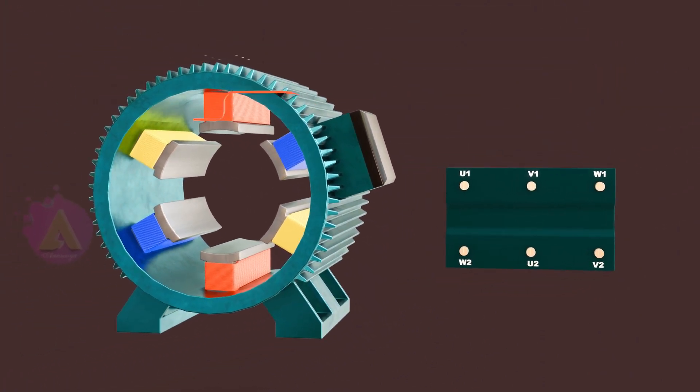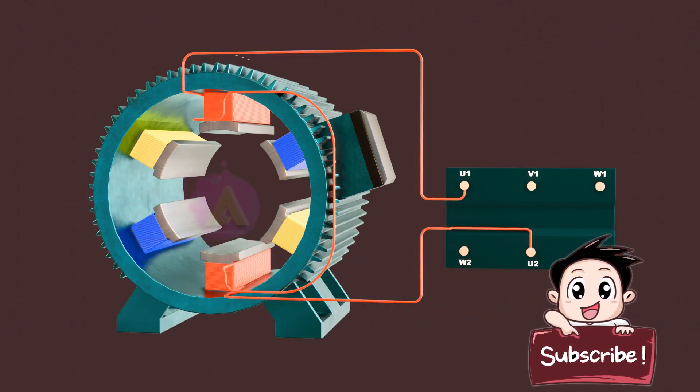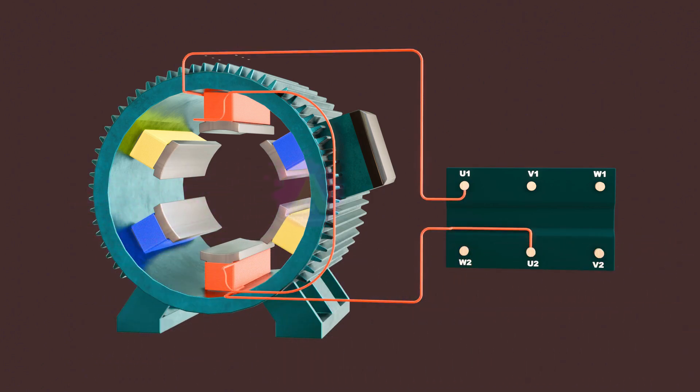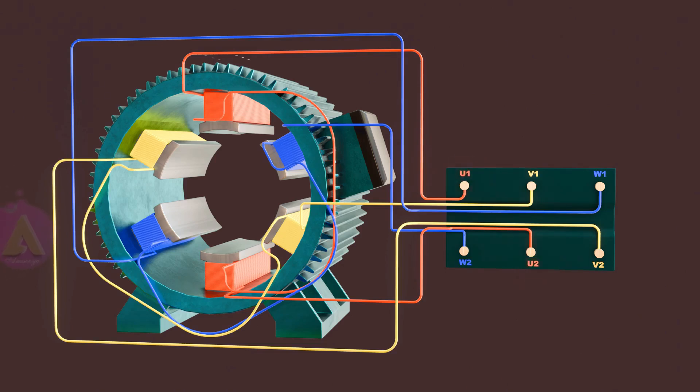We have our phase 1 coil connected to the two U terminals. Then the phase 2 coils which are connected to the V terminals, and phase 3 coil which is connected to the two W terminals. Notice the electrical terminals are arranged in a different configuration on one side to the other.